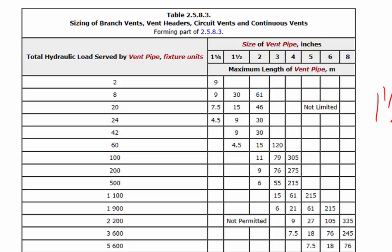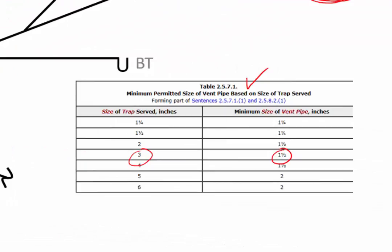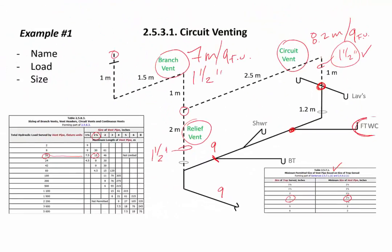For a load of nine fixed units we've exceeded 8, so the category is no more than 20 fixed units. Looking horizontally for a length exceeding our 7-meter branch vent, we reach 15 meters and look up — inch and a half. That satisfies table 2571 as well. We haven't made a non-compliant reduction from any vent connected to the branch vent. In this case we have an inch and a half circuit vent and an inch and a half relief vent both served by an inch and a half branch vent — that's fine.